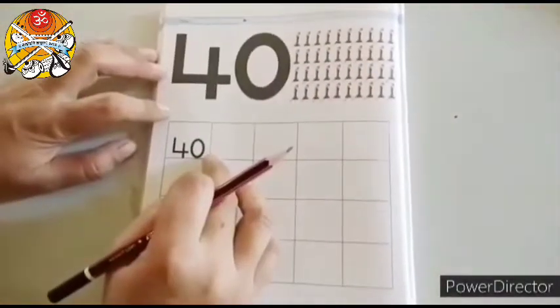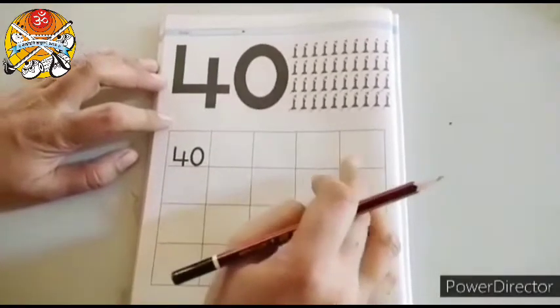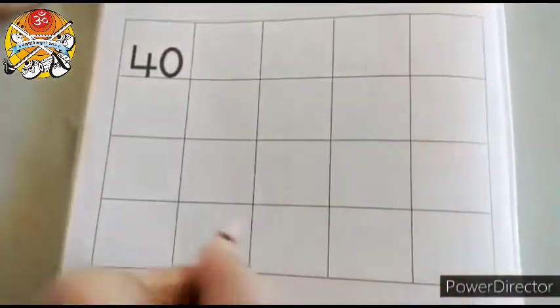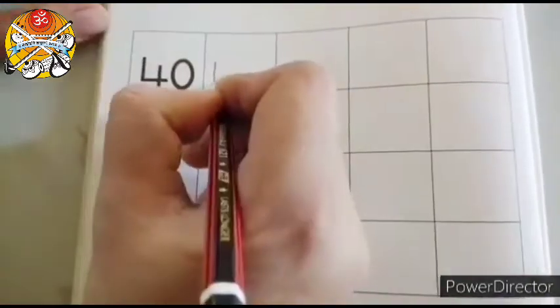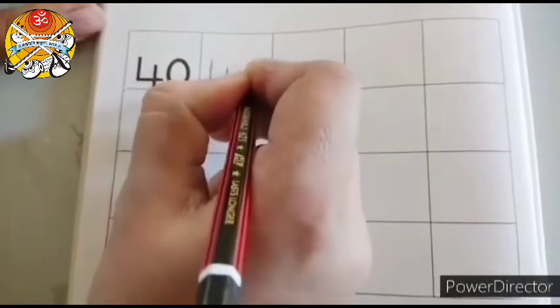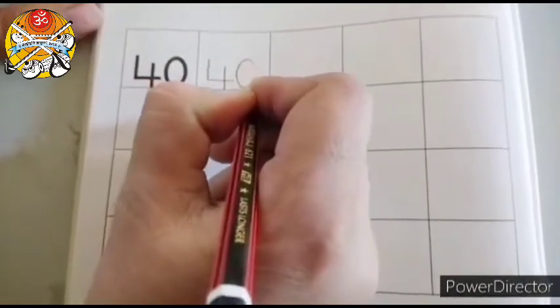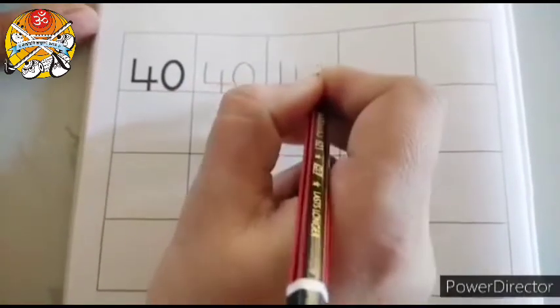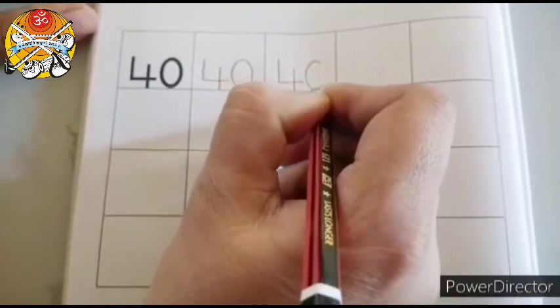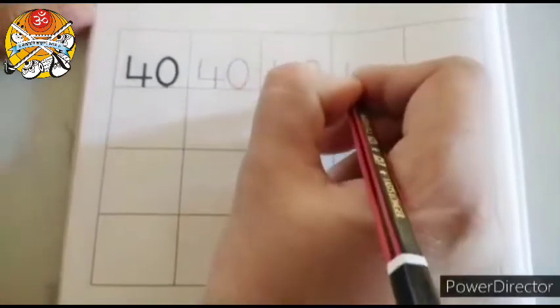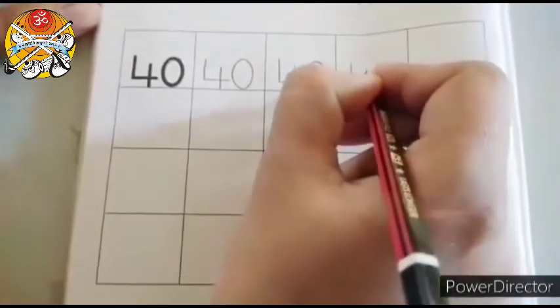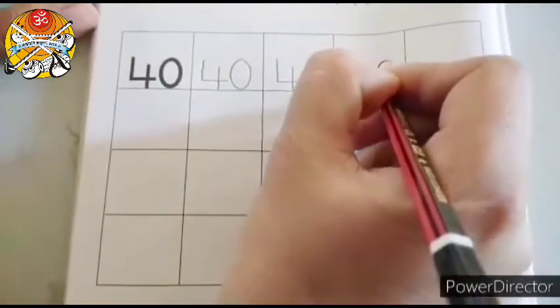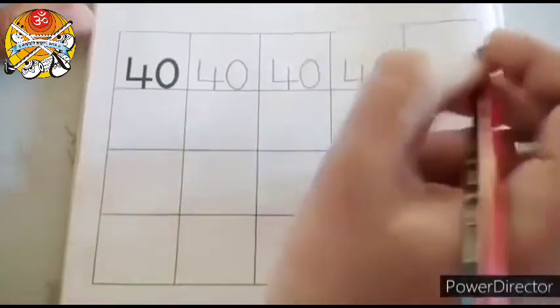Children in your number fun book on page number 78. In first line you have to trace the numeral 40. And then in all these boxes you have to write it. Now I will show you how to complete. 4, 0, 40. Again we will trace 4, 0, 40. Again we will trace it 4, 0, 40.